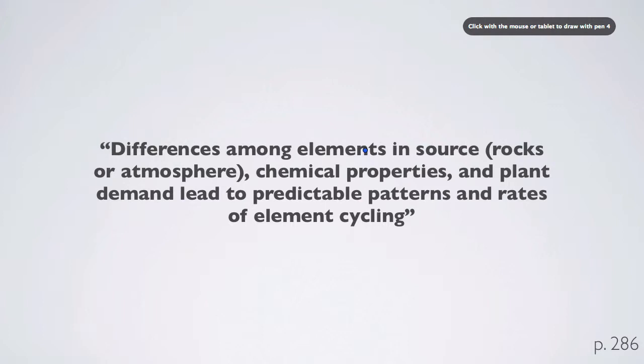So if you want to say, how does one cycle differ from the nitrogen cycle? Well, can that element be derived from rocks, or is it atmospherically derived? And then what are the different chemical properties of those elements, and how similar are they to the different forms of nitrogen? Lastly, are they elements that plants demand a lot of or not? Are they macro elements or micro elements? Once you know these, you can get into relatively predictable patterns in how those elements cycle.